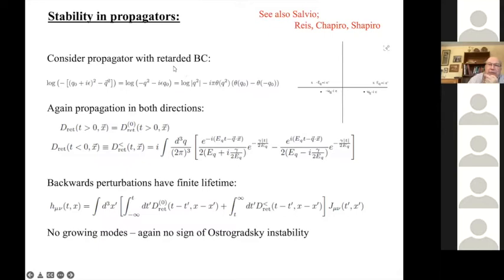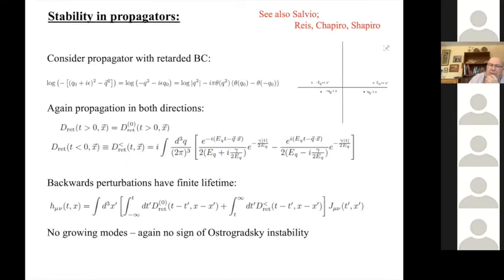If you form propagators with retarded boundary conditions — for example when trying to take classical limits — the usual retarded propagator goes forward, but in the backward time direction it has decaying exponentials. So there are backward propagations in the retarded boundary condition case, but they have a finite lifetime. There doesn't seem to be any instability due to growing exponentials, at least in these propagators.